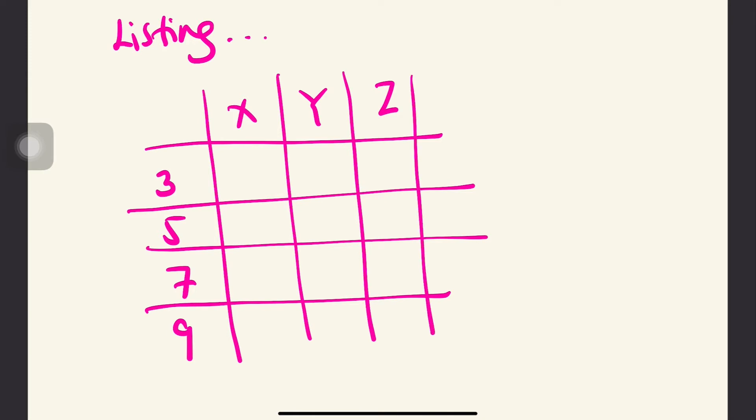First, we need to know the number of samples, right? So n(S) is 4 times 3 equals 12. Or we can count 1, 2, 3, 4, 5, 6, 7, 8, 9, 10, 11, 12. So, 12.